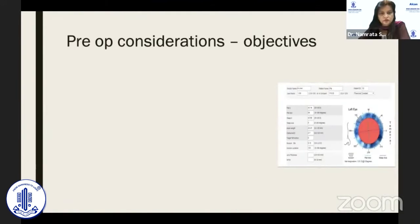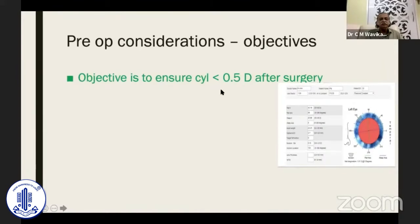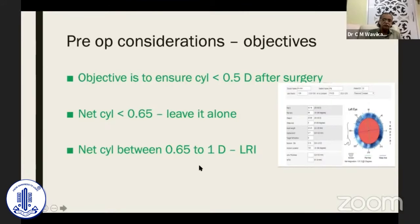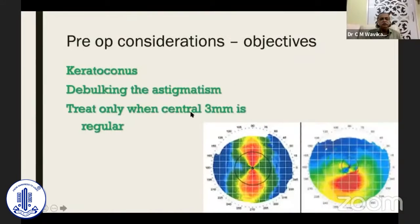Our objective in surgery is to ensure that post-operatively the patient is left with 0.5 diopter cylinder. You can see the net cylinder in the Barrett calculator. If the net cylinder is less than 0.65 diopters, leave it alone. If it is between 0.65 and 1 diopter, I prefer LRI. If the net cylinder is more than 1 diopter, a toric IOL is indicated — though everyone will have their own choices. For atypical corneas like keratoconus, the aim is just debulking the astigmatism, not completely eliminating it, and treat only when the central 3 mm shows regular astigmatism.